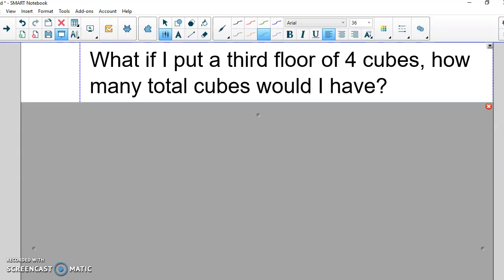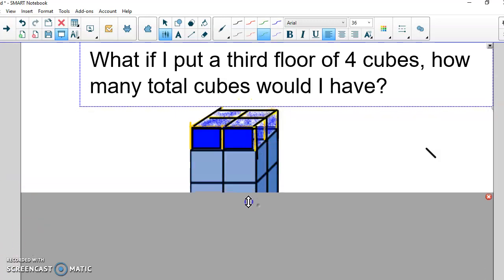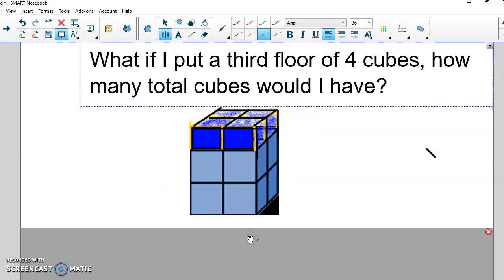What if I put a third floor of four cubes? How many total cubes would I have? Let's look. I would have 12 cubes. Again, these floors haven't changed. There's four on this floor, four on this floor, and four on this floor. And so if I were to then go and add those up, this building would have a space of 12 cubes.